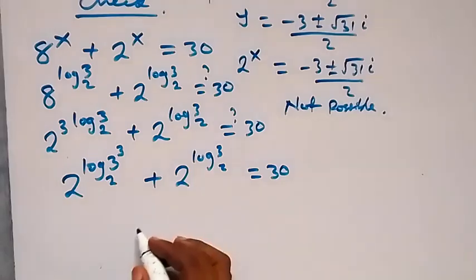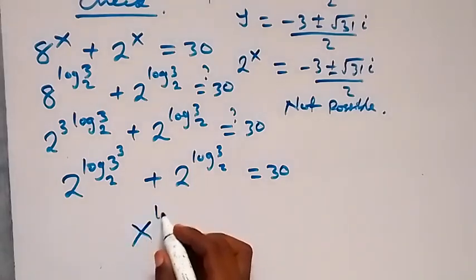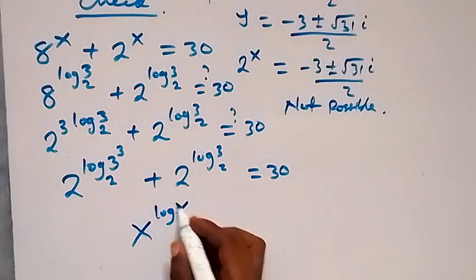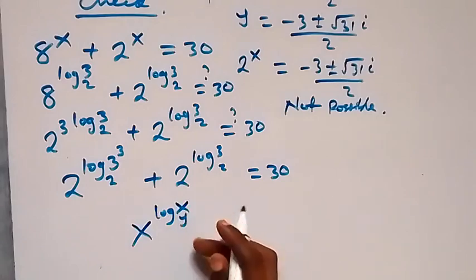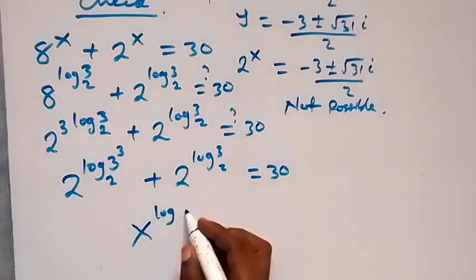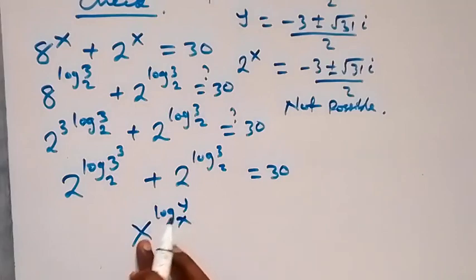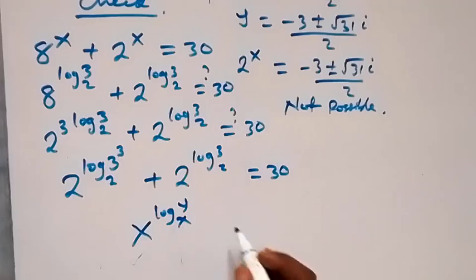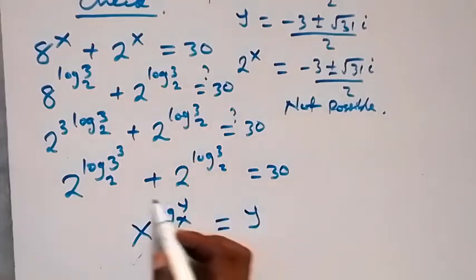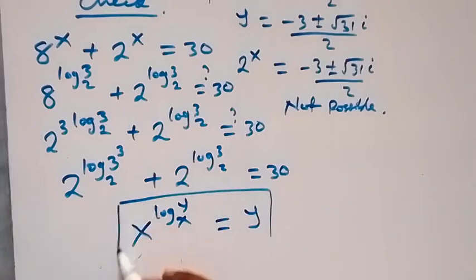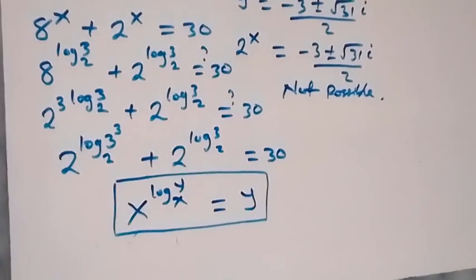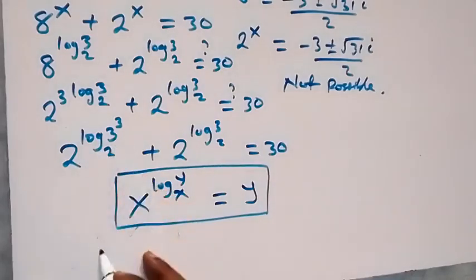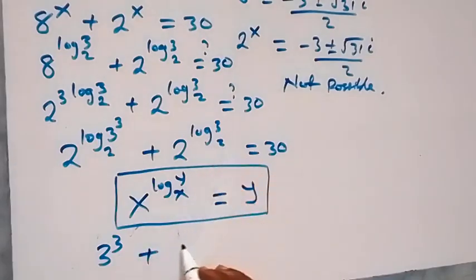From the law of logarithms, x raised to power log y base x equals y. Here the base of the exponential and the base of the log are both 2, so 2 raised to power log 3 base 2 equals 3. That means the first term becomes 3 raised to power 3, and the second term can be written as 3 raised to power 1, which is 3, and together they equal 30.